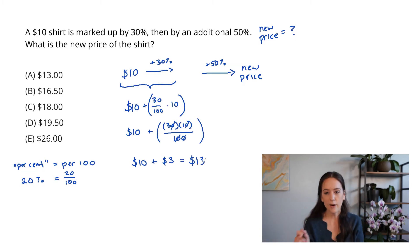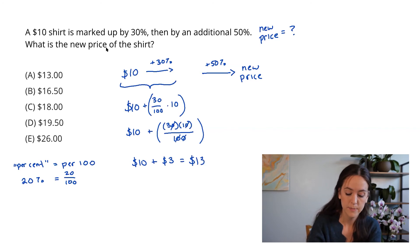Okay, so now is the very important part of this problem. You might be tempted to say, okay, great, I took 30% of $10. Now I'm marking it up by 50 more percent, so let me take 50% of $10. That would be so understandable, but unfortunately it would be wrong here. The reason is that we actually need to take that 50% of $13. We're not going to take it of the original. We're going to take it of $13.